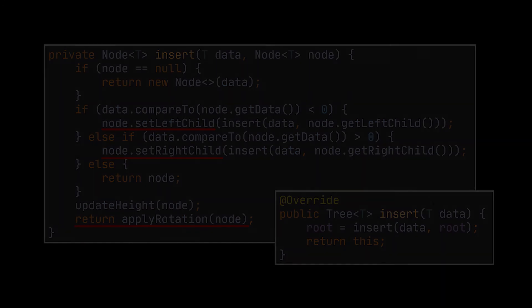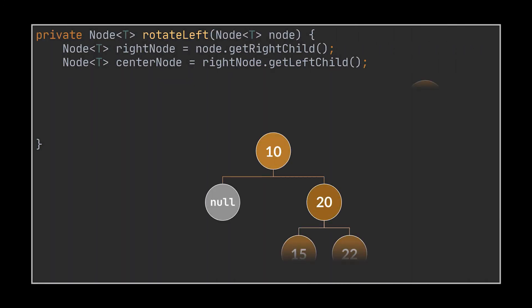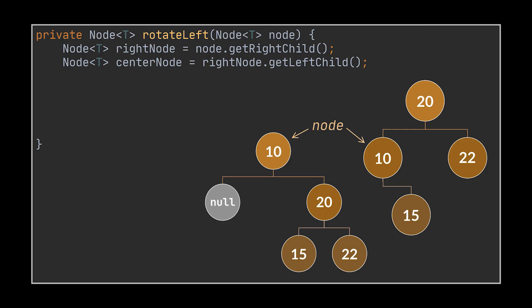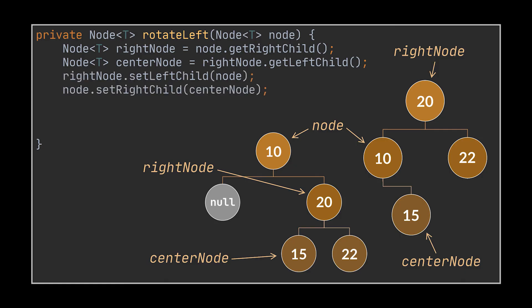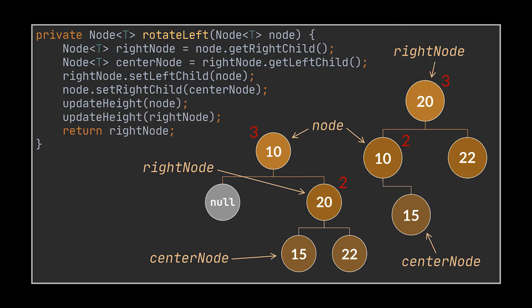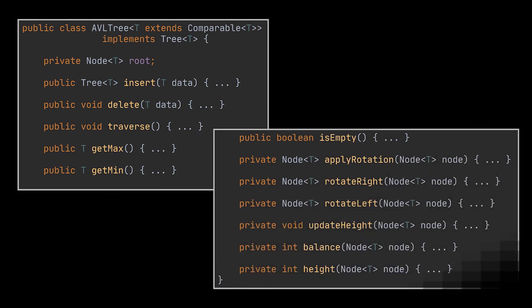The rotateLeft method is the symmetric case. We store a reference to the right node and center node, set the left child of the right node to be the root, and the right child of the root to be the center node. We update the heights of the node and right node variables, then return the right node as the new root. Joining all these methods together gives us the complete and final implementation of the AVL self-balancing binary search tree.